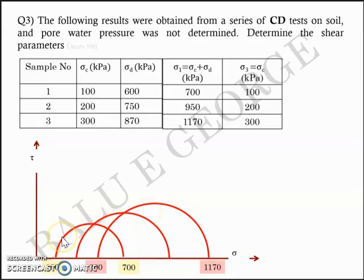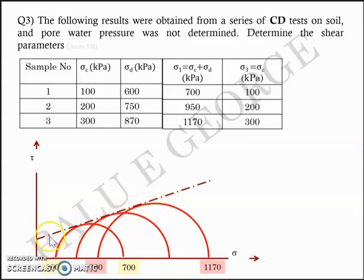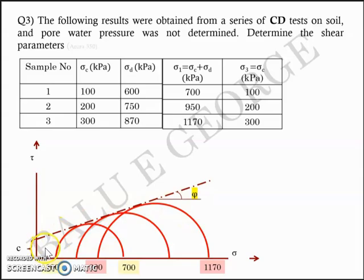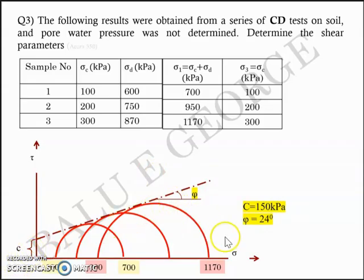You will have a Mohr-Coulomb failure envelope that is tangential to all three Mohr circles. Drawing a line tangential to the three circles gives a cohesive intercept at the y-axis (C) and a slope of phi (angle of internal friction). Graphically, using a graph sheet, that turns out to be approximately 150 kilopascal as the y-intercept (cohesion) and a slope of 24 degrees.